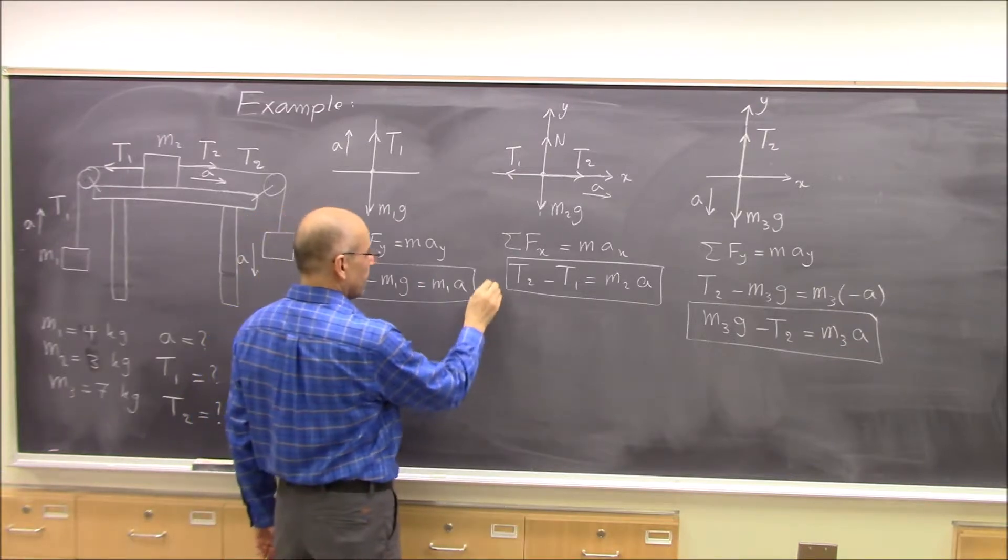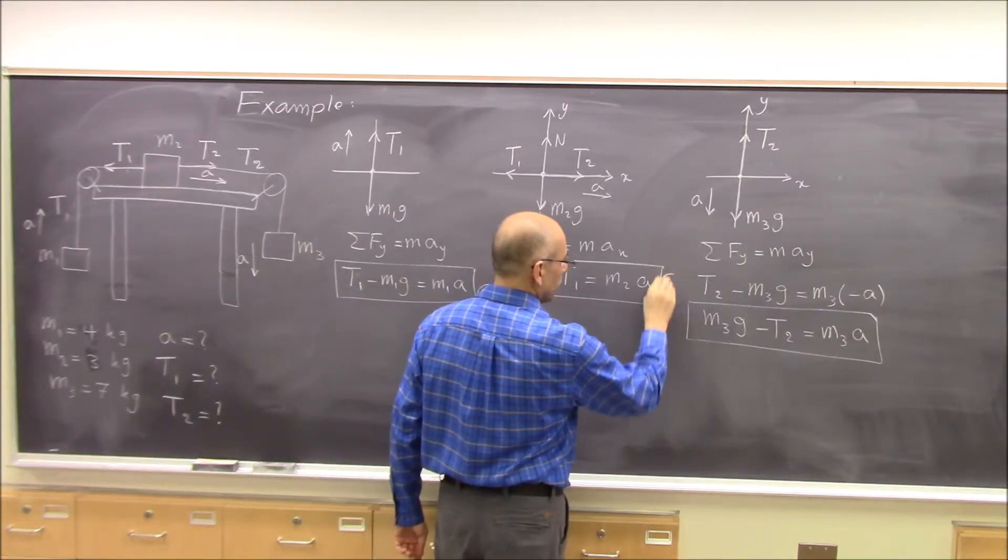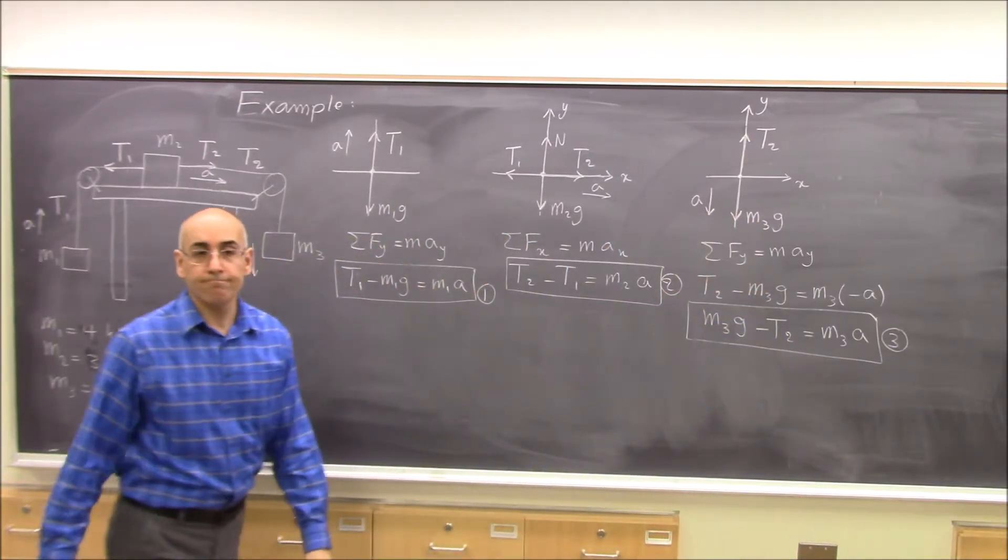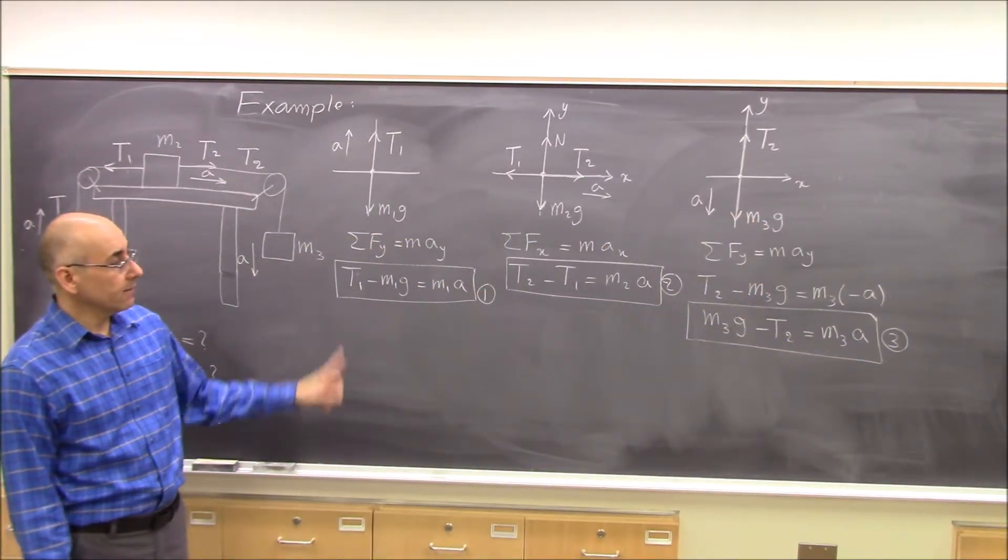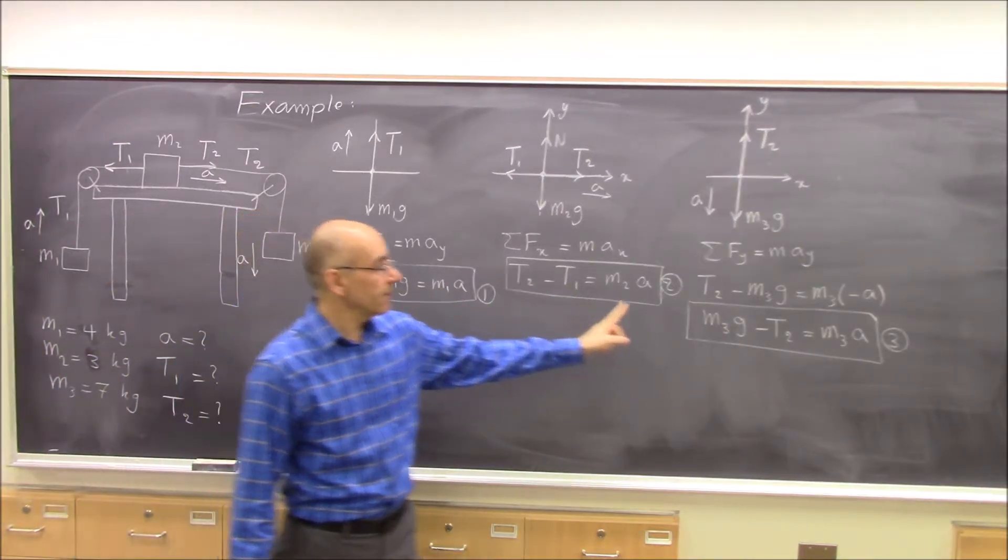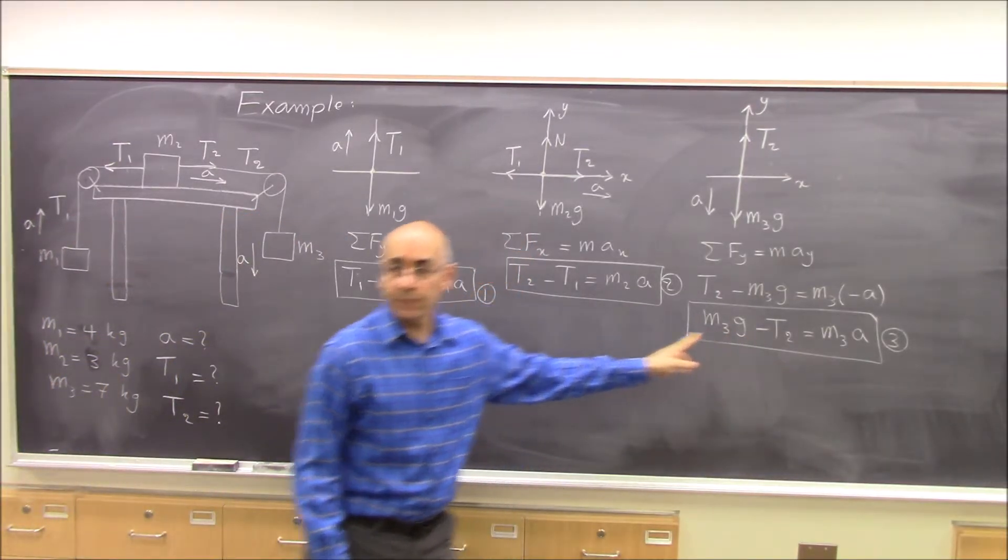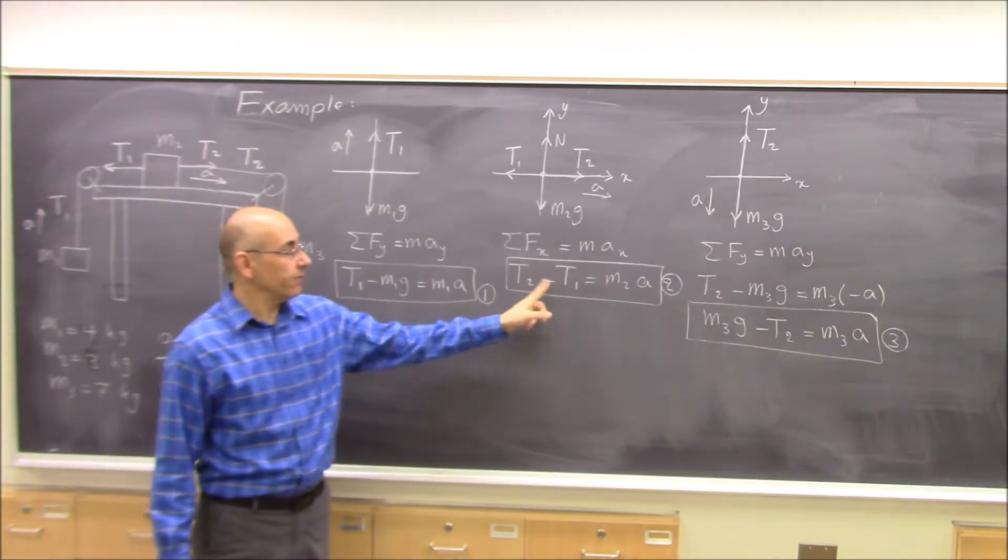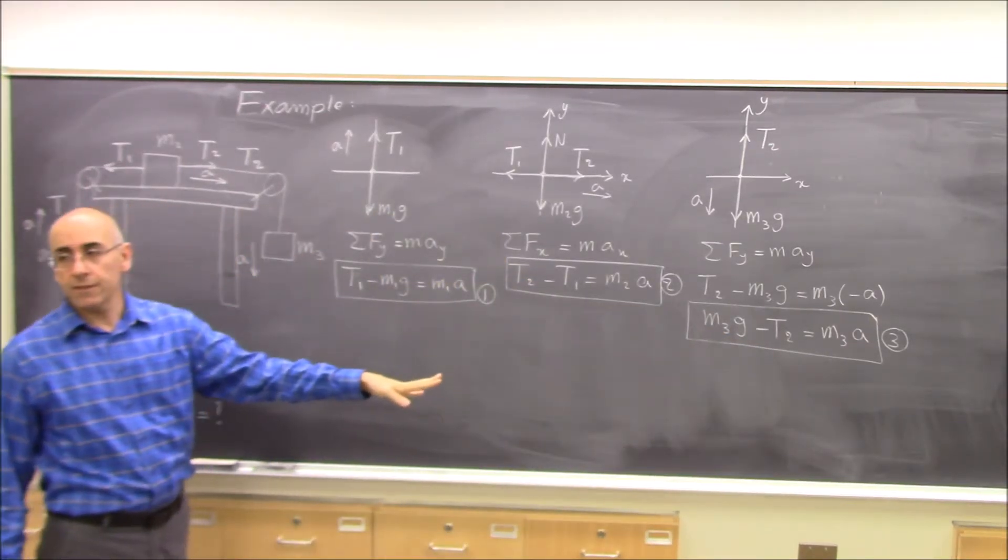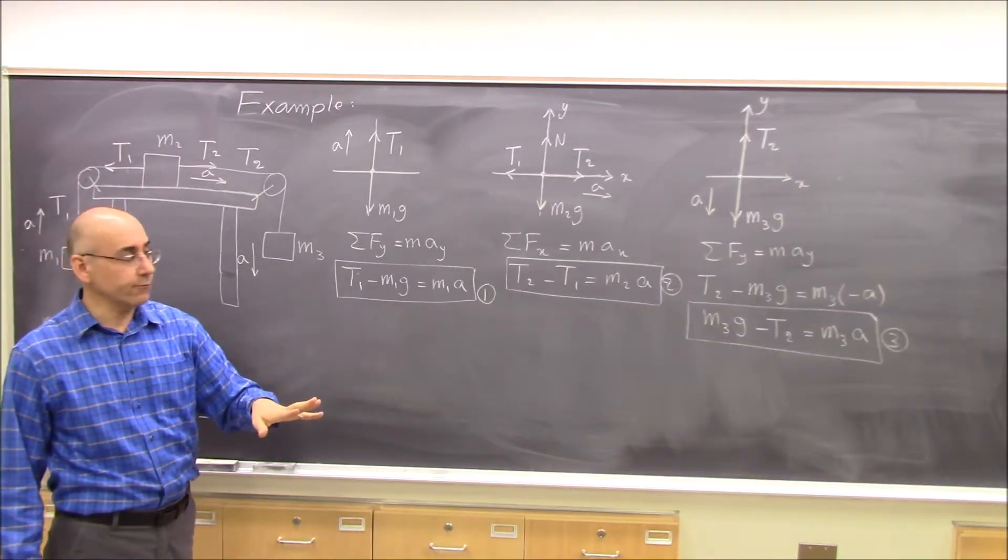Equation 1, equation 2, equation 3. Now it says t1, t2 minus t1, m3g minus t2. So you have t1 and negative t1, t2 and negative t2. If you add all the three equations, what happens? Both t1 and t2 cancel out.